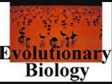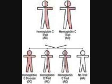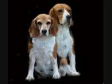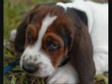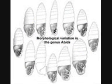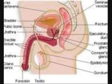In biology, evolution is a change in the inherited traits of a population of organisms from one generation to the next. These changes are caused by a combination of three main processes: variation, reproduction, and selection.